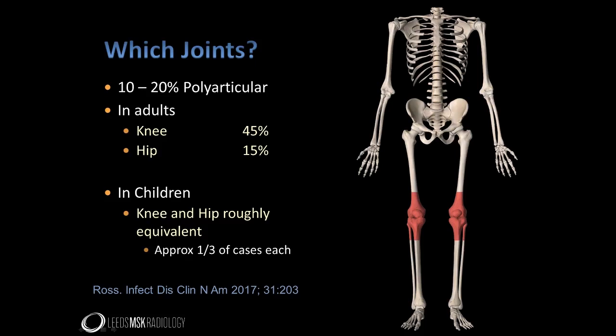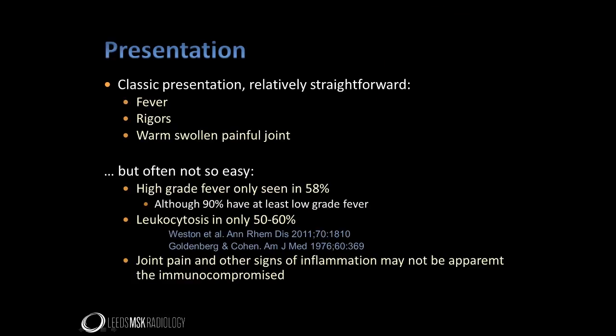The hip is second most commonly affected, but hip involvement is significantly less frequent than knee infection. This is in contrast to the situation in children, where the knee and hip are affected with similar frequency. When the patient presents with the classic picture of fever, rigors, and an inflamed swollen joint, the diagnosis of septic arthritis is fairly straightforward. However, this presentation is less common than one might expect, with high-grade fever seen in less than 60% of patients, and as many as 50% of patients failing to show a raised white cell count. Joint pain and other features of inflammation may not be apparent in patients who are immunocompromised, for instance in patients with rheumatoid arthritis who are on corticosteroids.